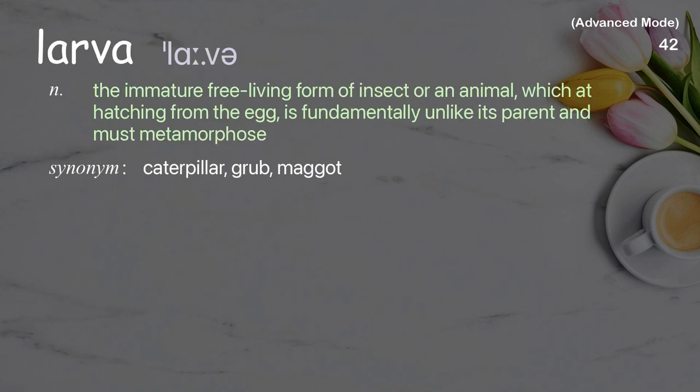Larva: the immature free-living form of an insect or animal which, at hatching from the egg, is fundamentally unlike its parent and must metamorphose.